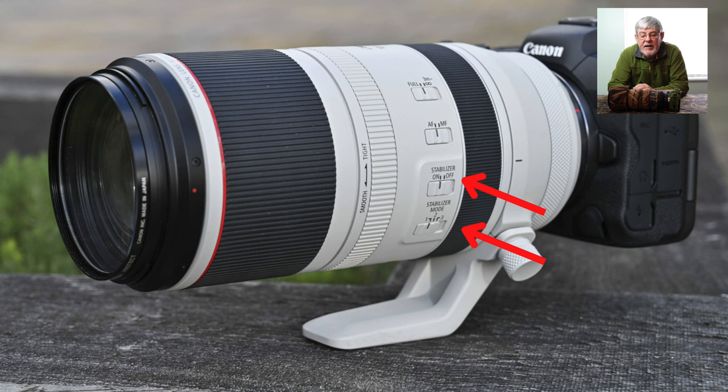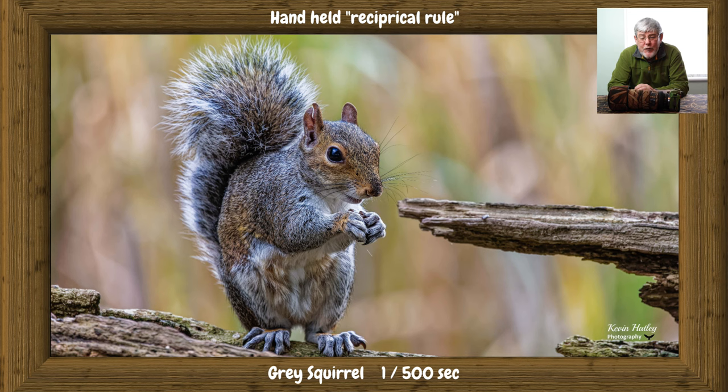Even with image stabilization, you need to be careful at certain shutter speeds and may need to support your camera on a tripod or bean bag to aid stabilization. There's a simple rule called the reciprocal rule, one of the basics of photography. It basically means that if you're using a 400mm lens, your minimum shutter speed should be 1/400th of a second. For example, I took a picture of a grey squirrel handheld, so the minimum shutter speed was 1/500th of a second.